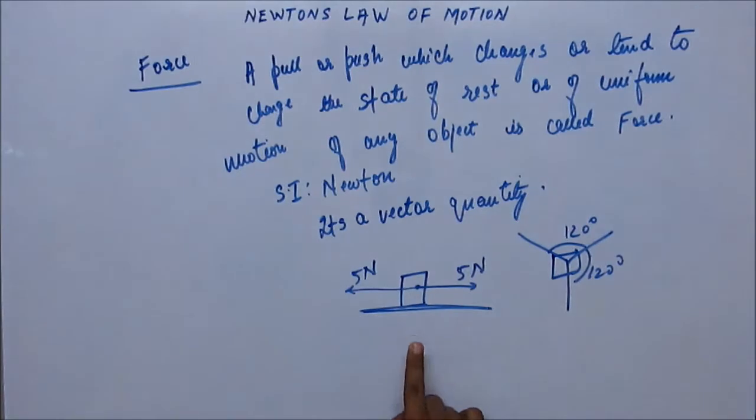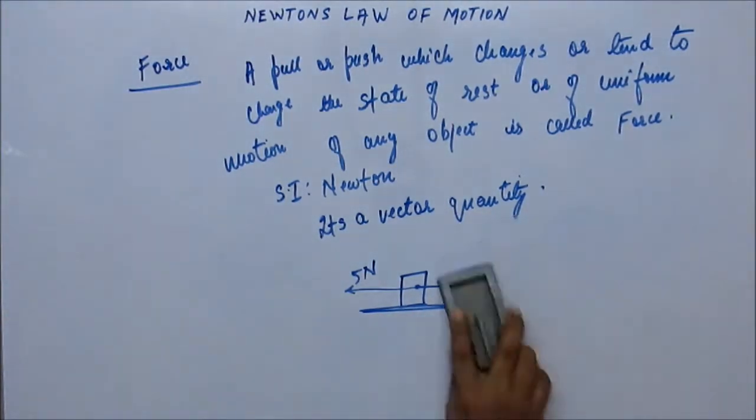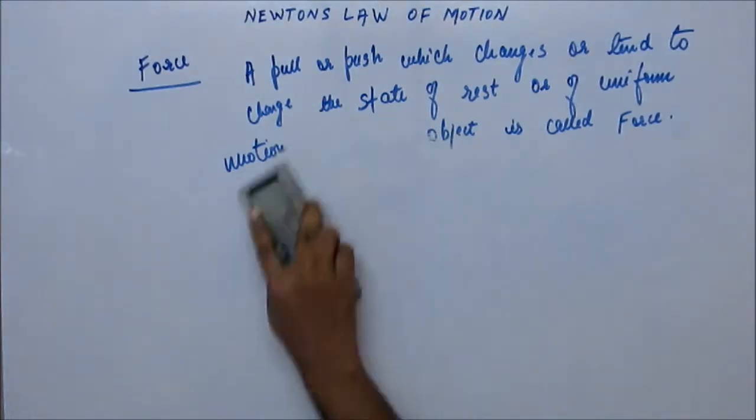For example, in this case the block is not going to go anywhere, neither left nor right, because the net amount of force is zero. Okay? Okay. Now we are ready to go for Newton's first law of motion.